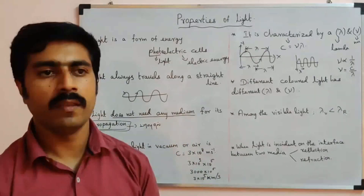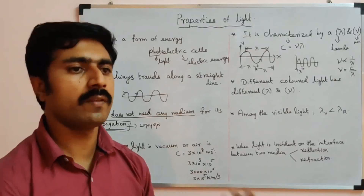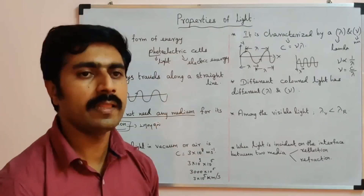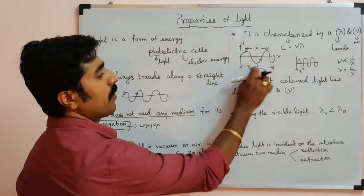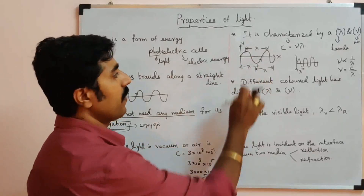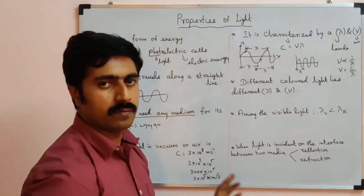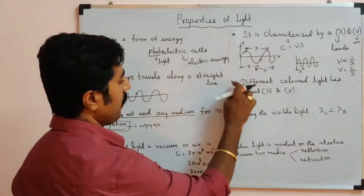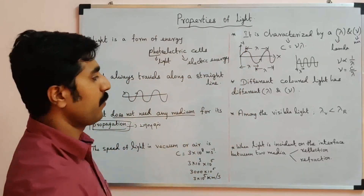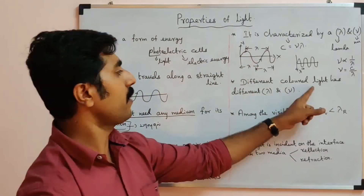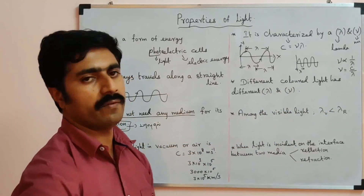To summarize: frequency is the number of vibrations produced, and wavelength is the length of a wave — the distance from crest to crest or trough to trough. That covers the fifth property. The sixth point: different colored light has different wavelengths and different frequencies.